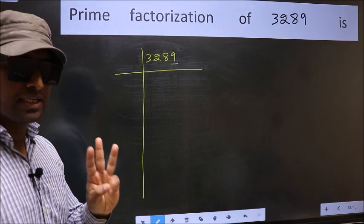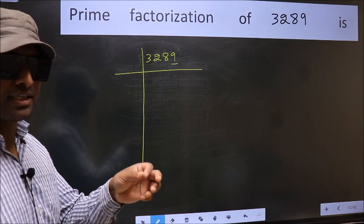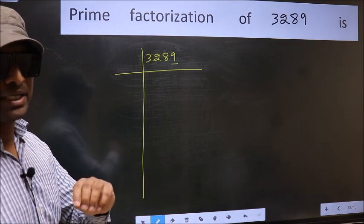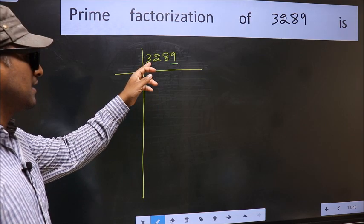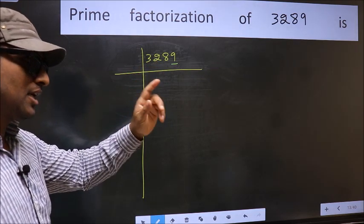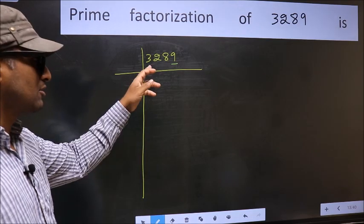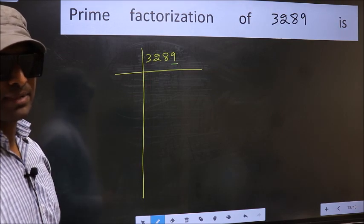Next prime number 3. To check divisibility by 3, we should add the digits. 3 plus 2 plus 8 plus 9. We get 22. And 22 is not divisible by 3, so this number is also not divisible by 3.